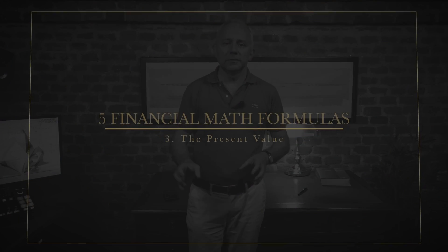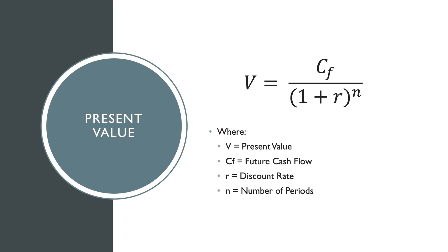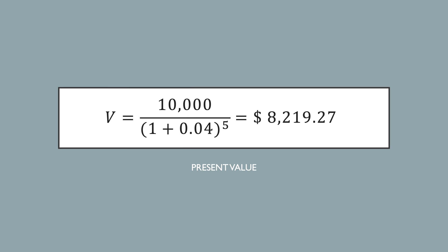Formula number three: the present value. Here we enter the art of finance — the concept that one dollar today is worth more than one dollar tomorrow. The formula is: V equals CF divided by (1 plus R) to the power of N, where V is the present value, CF is the future cash flow, R is the discount rate, and N is the number of periods. For example, do you want to know how much a payment of $10,000 that you will receive in five years at a rate of 4% is worth today? Applying the formula, it is worth $8,219. This formula is the basis of discounted cash flow, the most widely used valuation method for estimating the value of a company.